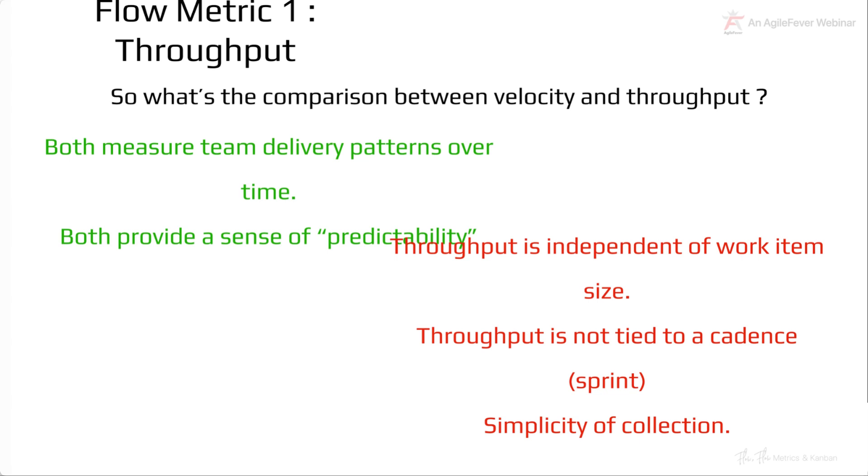Both throughput and velocity, they measure team delivery patterns. They also give you a sense of stability and predictability. But throughput is independent of work item size at this point in time. You can make it dependent on it. That's a different discussion. But at this point in time, throughput is independent of work item size.